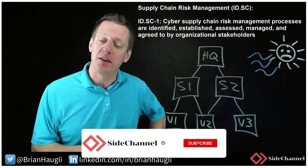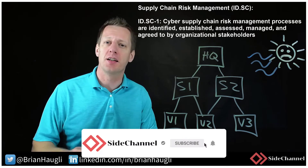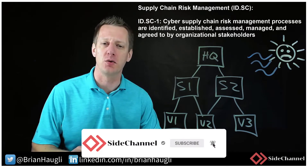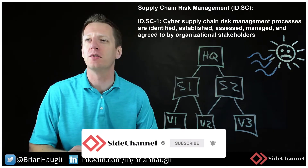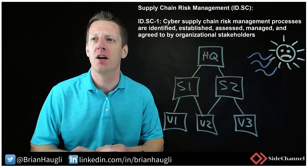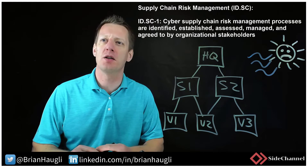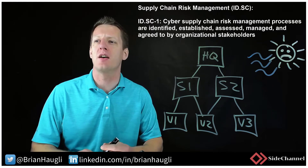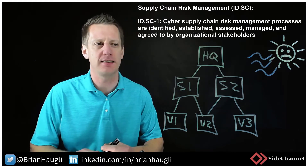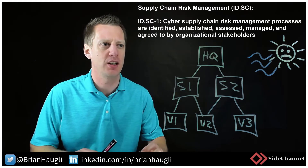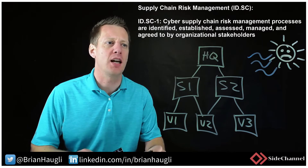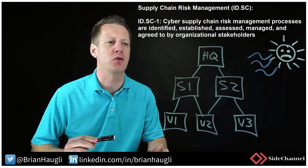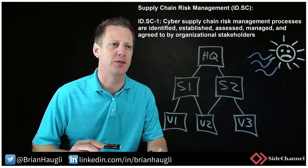The first subcategory within this new category is ID.SC-1: Supply Chain Risk Management Processes Are Identified, Established, Assessed, Managed, and Agreed to by Organizational Stakeholders.